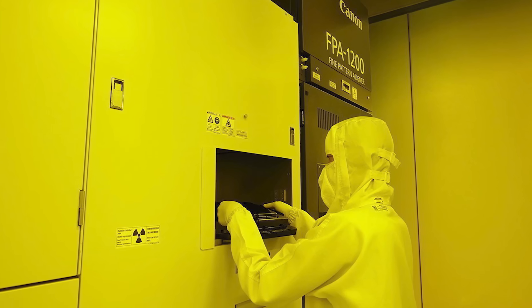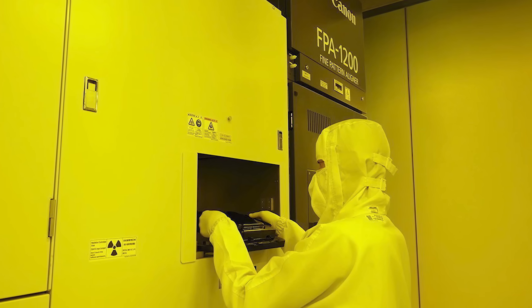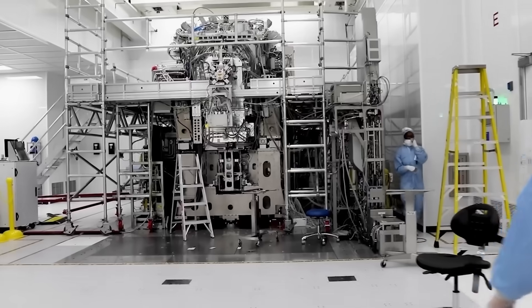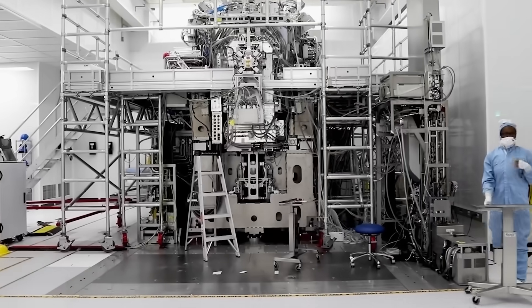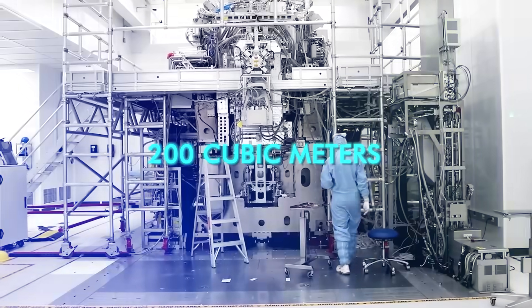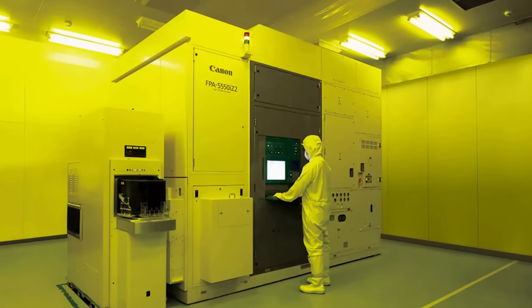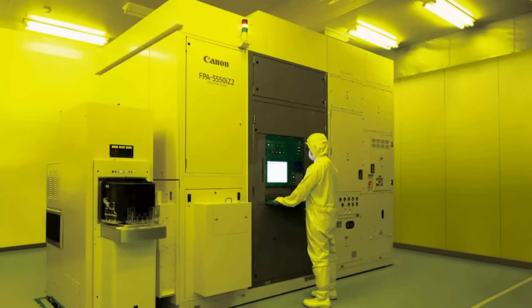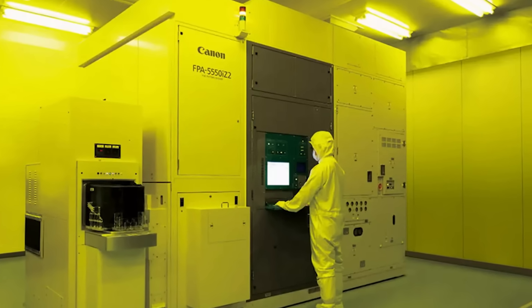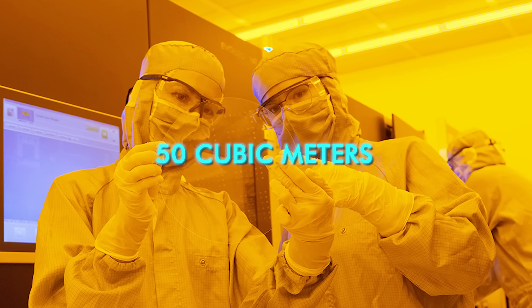In addition, NIL takes up less of the extremely valuable real estate on the fab's cleanroom floor. Today's EUV systems are as big as double-decker buses, about 200 cubic meters. But a cluster of NIL systems occupies less than half that volume. Though a mask replication tool, taking up 50 cubic meters, is also required.